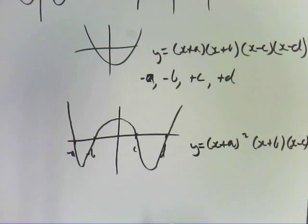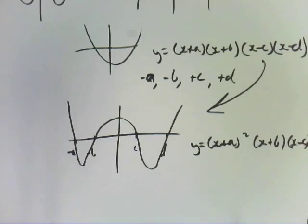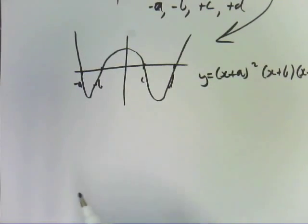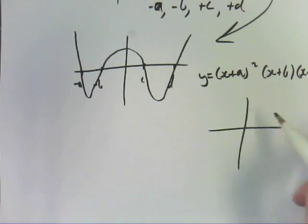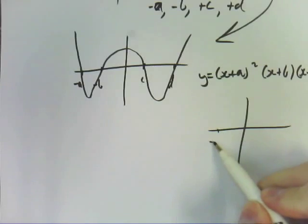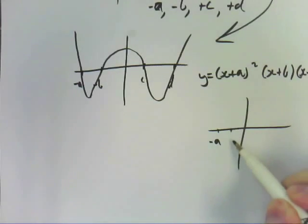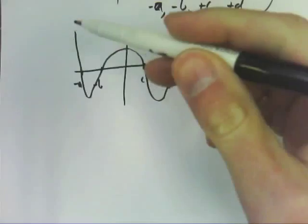That graph will look like, I'll do it underneath it, so it will touch at negative a, it will cross at negative b, and it will cross again at positive c.